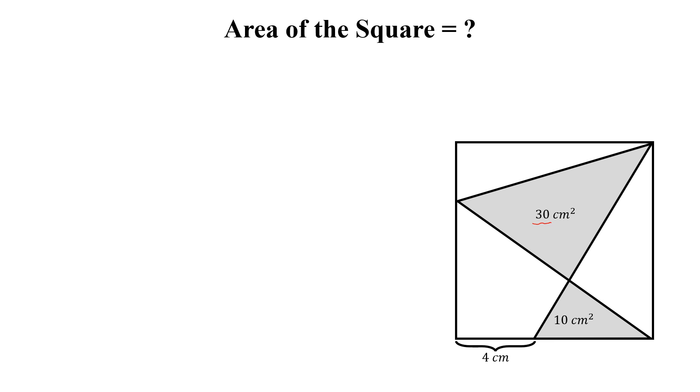The question is: this shaded area is 30 centimeter square, this shaded area is 10 centimeter square, and this length is 4 centimeter. How to calculate the area of the square?